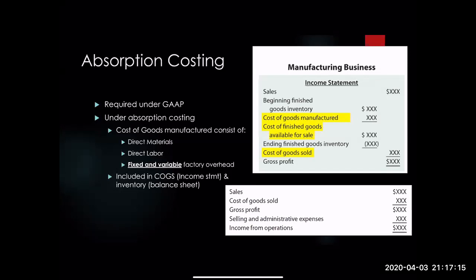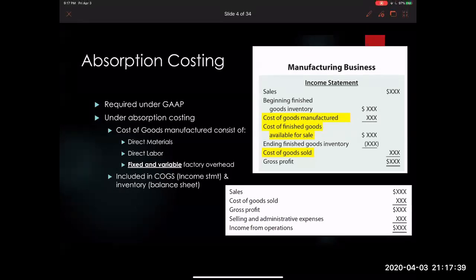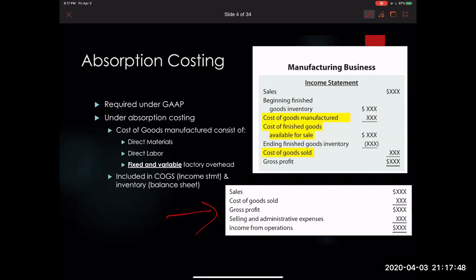If you look at the slide, this income statement from a manufacturing business should look very familiar — we covered this a lot in Chapter 1. It includes everything in the cost of goods sold on the income statement and inventory on the balance sheet. This format shows sales, less cost of goods sold, equals gross profit; then subtract selling and administration expenses to get income from operations.